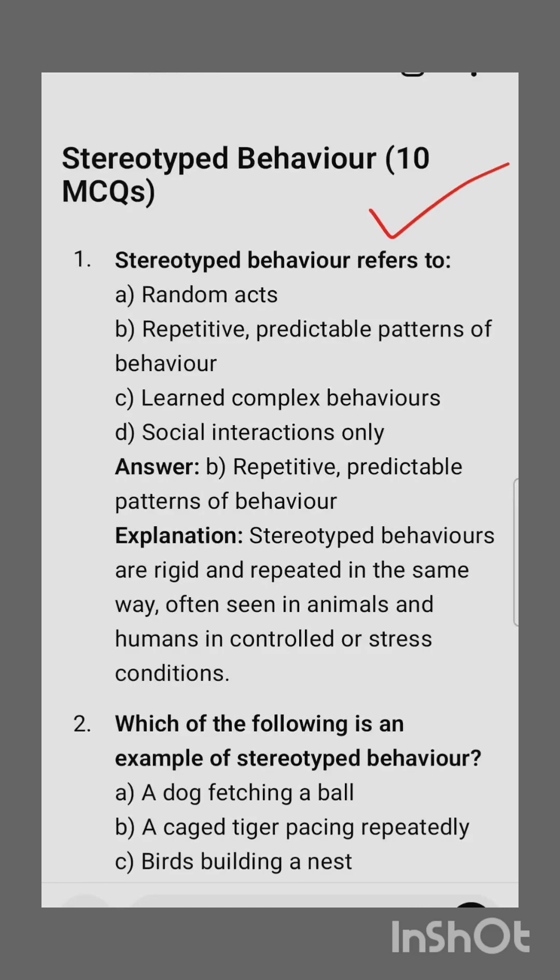Assalamu alaikum and good afternoon to everyone. Hope you all are doing well. In this video we are going to discuss one more topic from animal behavior. The topic is from the section on innate behavior. The topic name is innate behavior — definition and examples. This topic includes subtopics: spatial orientation, kineses and taxes, reflexes, instincts, and motivations. We will discuss one sequence from each subtopic. The first subtopic is stereotyped behavior.